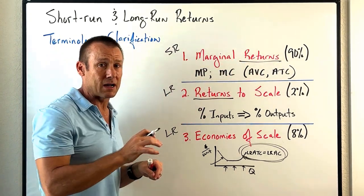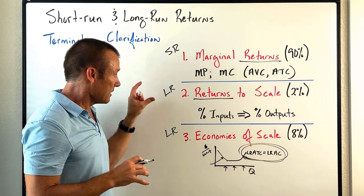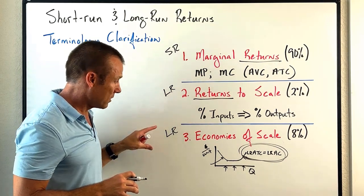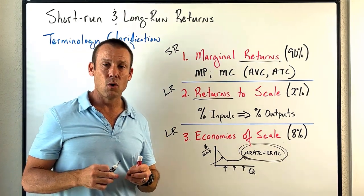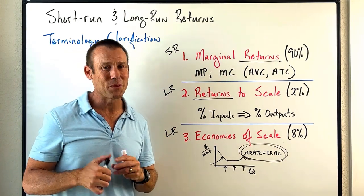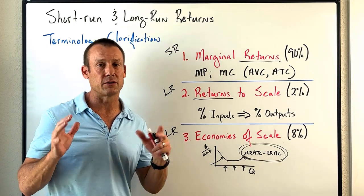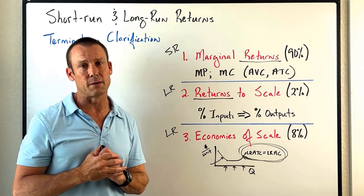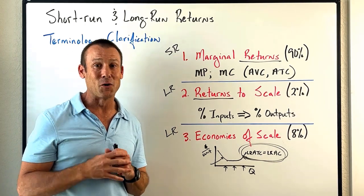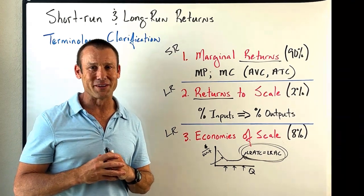So to recap: marginal returns — short run, change in output from changing one variable input. Returns to scale and economies of scale — both long run. Hope that made sense and helps you in your study of microeconomics. I hope to see you in another video.